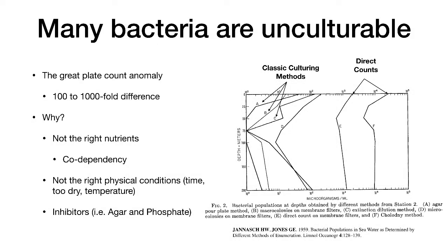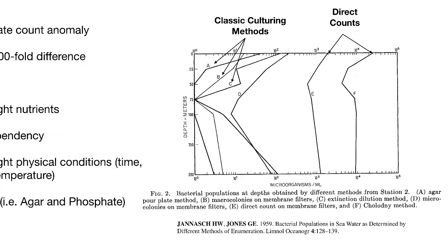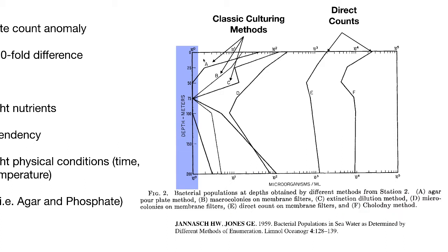The techniques used to investigate the microbiome arose because of a phenomenon that was observed decades ago: the Great Plate Count Anomaly. An excellent rigorous example of this was a paper published by John Eshel Jones in the Journal of Limnology and Oceanography. Figure 2 from this paper is shown here. In this experiment, they are trying to count bacteria in seawater using a bunch of different methods. On the x-axis is the number of microorganisms per milliliter, and on the y-axis is the depth in the ocean in meters.